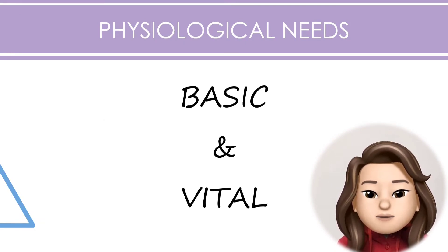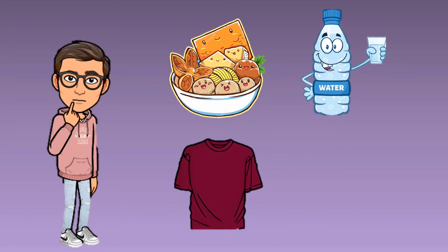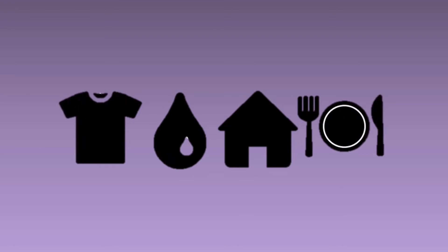Physiological needs are the basic and the most vital needs for our survival. Q, can you please share your opinion of what you think these basic needs are? I think it is food, water, clothes, a place to live and sleep. Well done Q, that's the right answer. Physiological needs are biological requirements for human survival — like air, food, drink, shelter, clothing, and sleep. If these needs are not satisfied, the human body cannot function optimally. Maslow considered physiological needs the most important, as all the other needs become secondary until these needs are met.